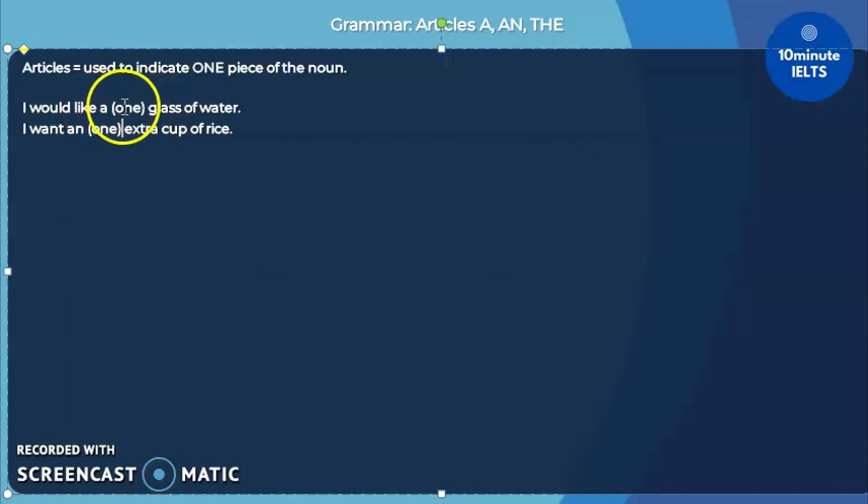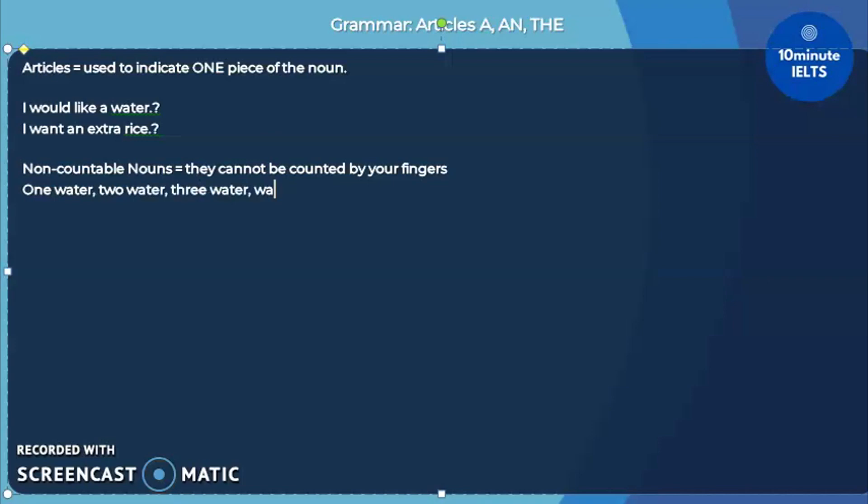Let's say that we don't want to use glass here in this sentence and just say water. Can we say, I would like a water? It sounds weird. If I take out the cup and just say, I want an extra rice, again, it sounds strange to the ear. That's because water and rice are what we call non-countable nouns. They cannot be counted by your fingers. A water is just wrong.